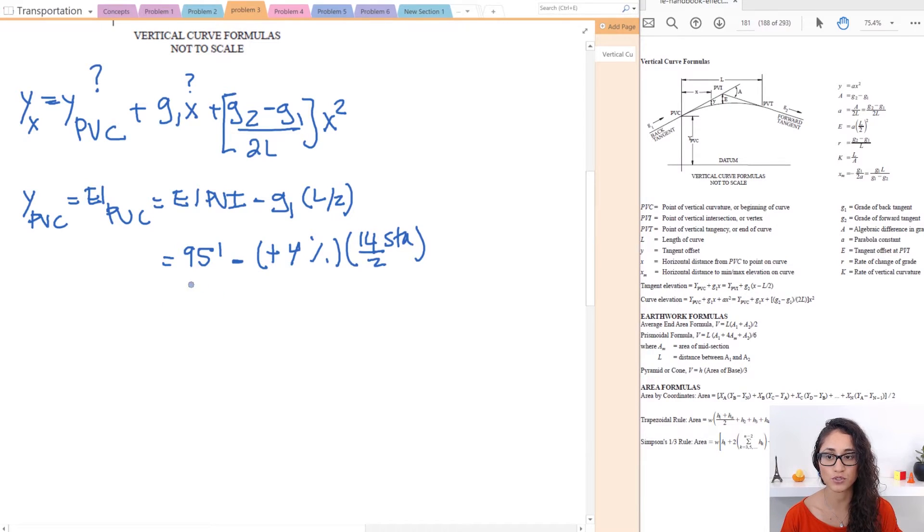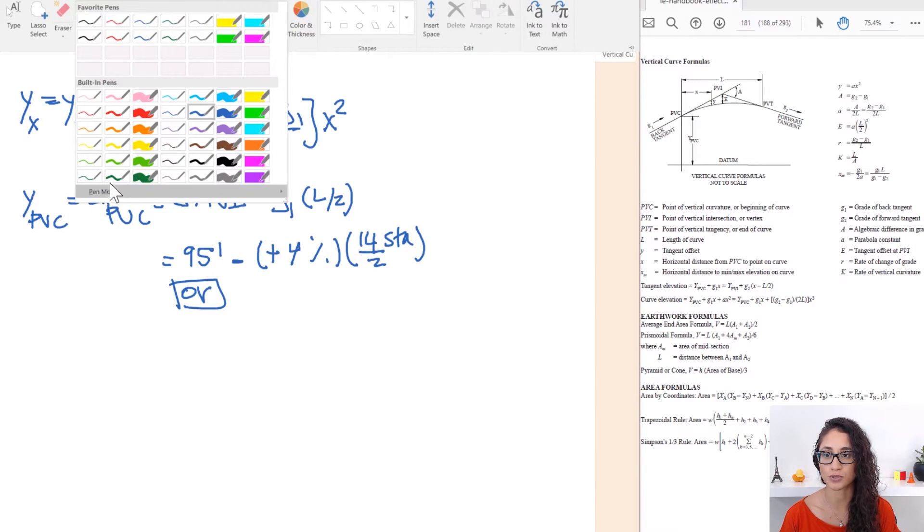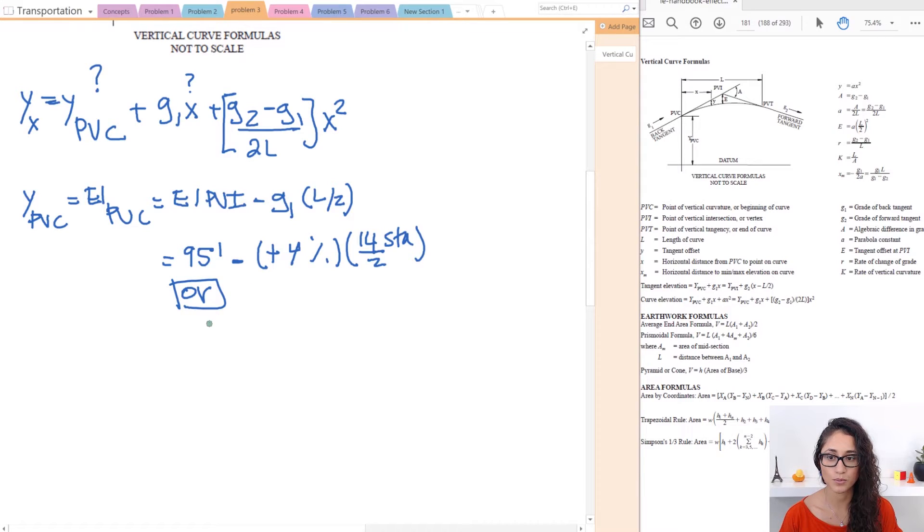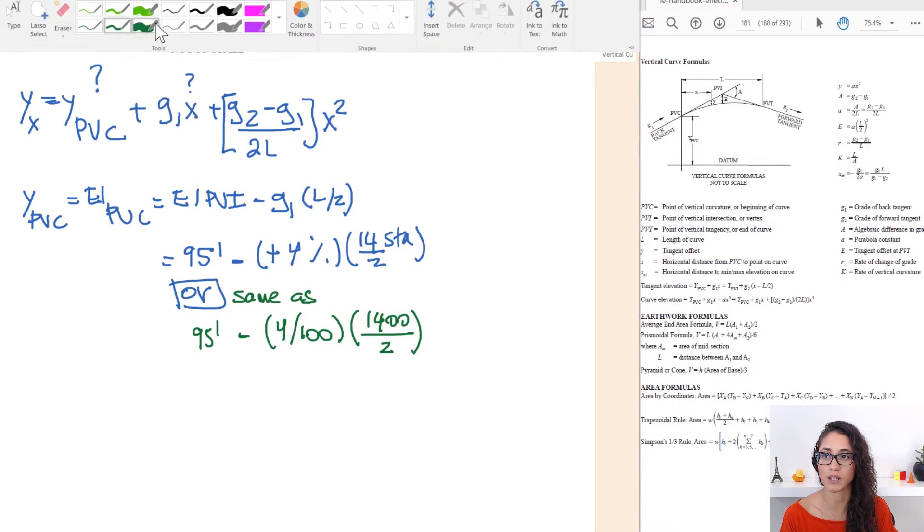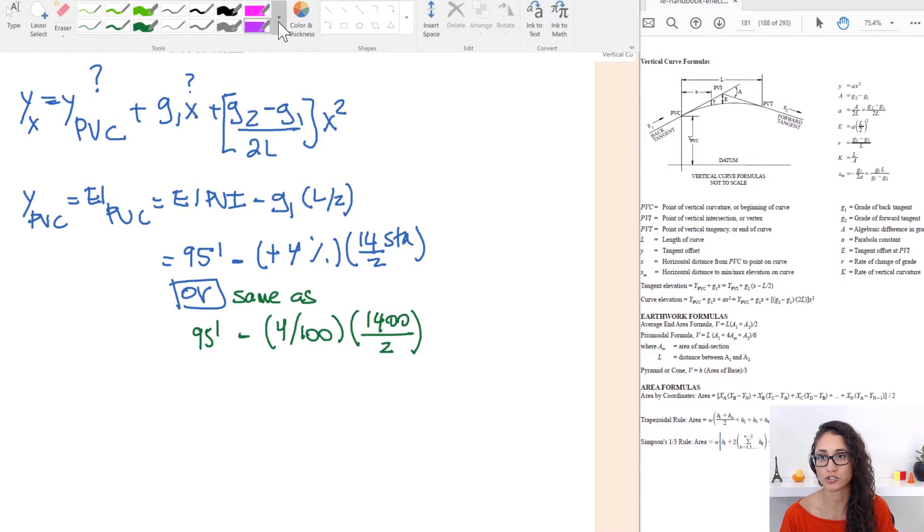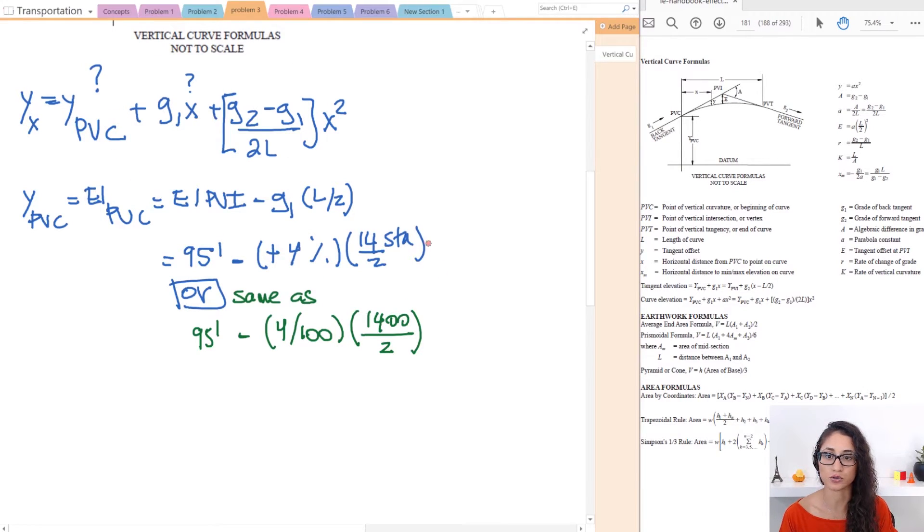So in other words what I'm trying to say is this is the same, let's do it in a different color so I don't confuse you guys. So this is the same as 95 minus 4 divided by 100 multiplied by 1400 divided by 2. So this will give you pretty much the same answer. So just keep that in mind. So you have to either divide by 100 the percentage, and then you use this in feet, this is feet, or you use this in station and this has to be in percentage.